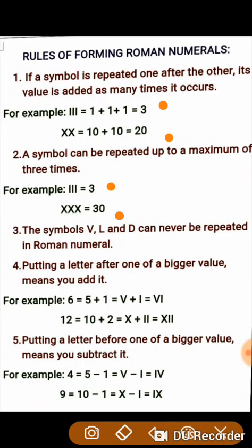The fourth rule says putting a letter after one of bigger value means you add it. For example, forming number 6: 6 is 5 plus 1. 5 is represented by V and 1 by I, so it is written as VI. Another example is 12: 12 is 10 plus 2. 10 is written as X and 2 as II, so X plus II gives XII.